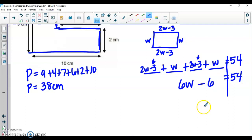Go ahead, finish solving this equation to figure out what the width is. To solve your equation, you're going to add 6 to both sides. So you're going to get 6w equals 60. Divide through by 6 and the width is going to be 10.